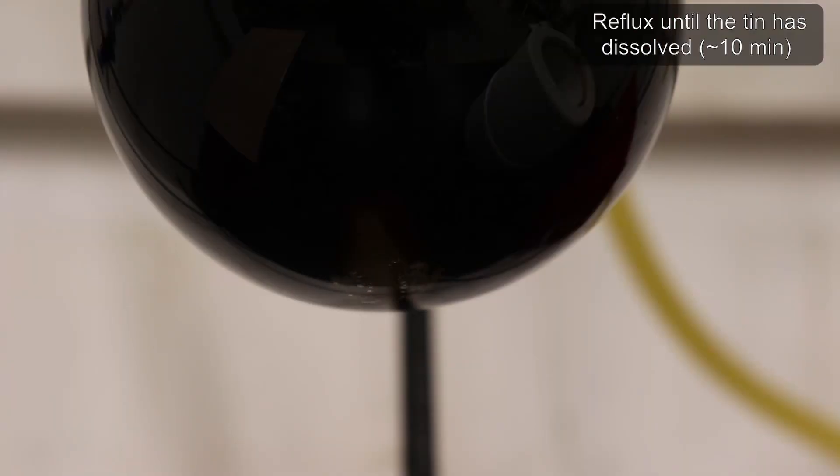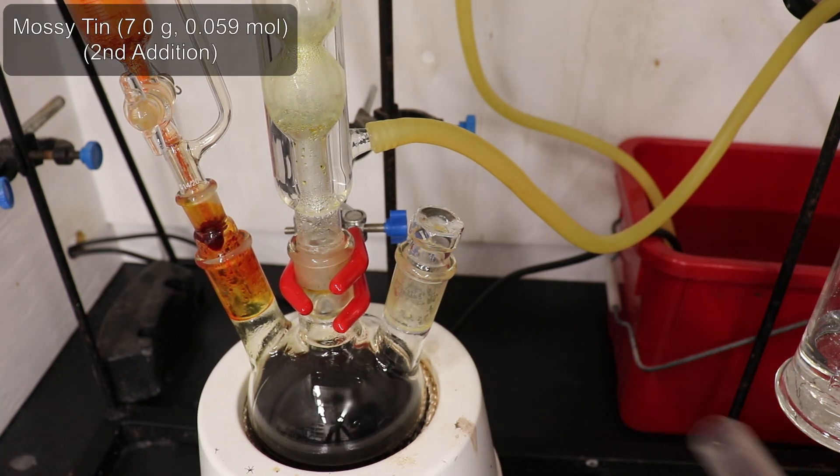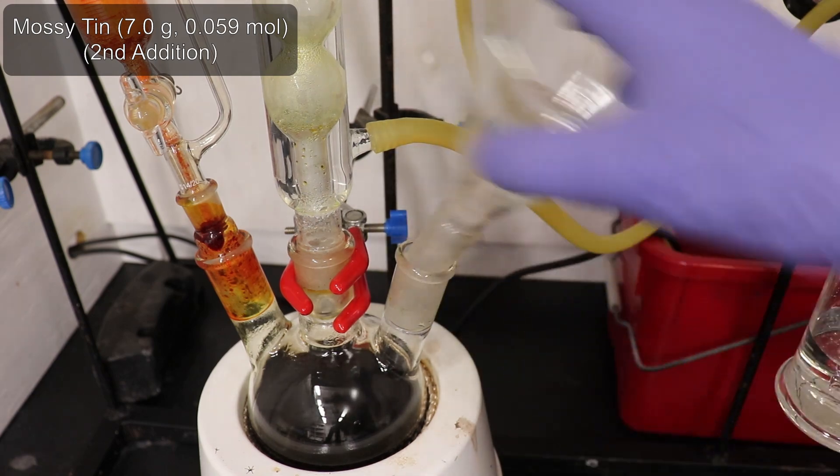The mixture is heated to reflux until the tin portion fully dissolves. After boiling for approximately 10 minutes, the majority of the initial tin had dissolved.